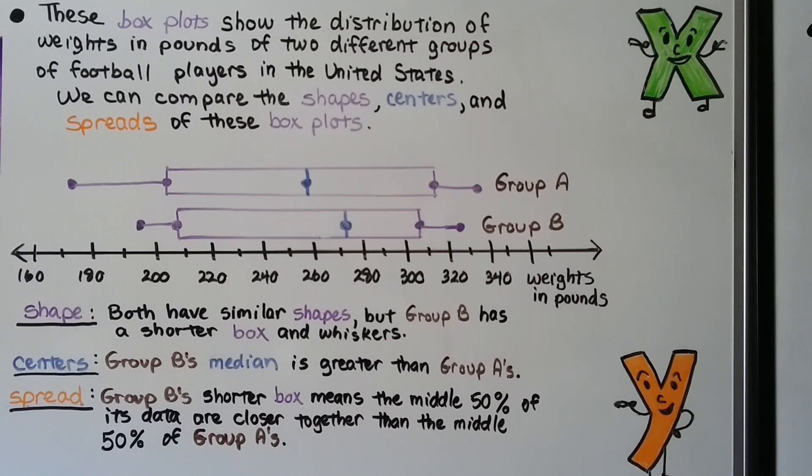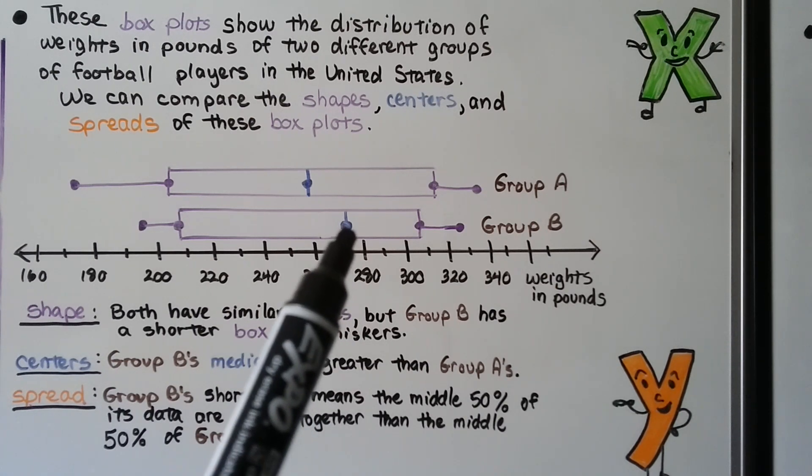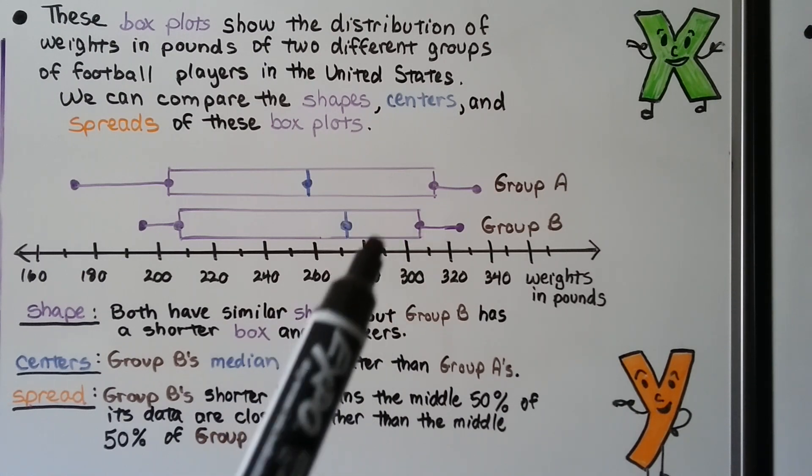For shapes, they both have similar shapes, but group B has a shorter box and whiskers. See? This is shorter than that one. For the centers, group B's median is greater than group A. This median is greater because it's more on this side.